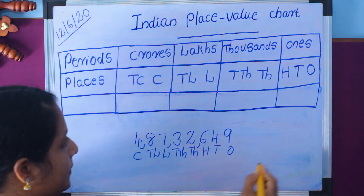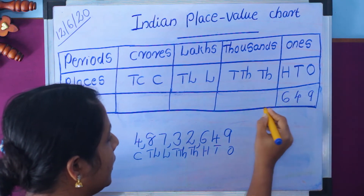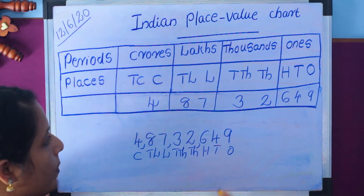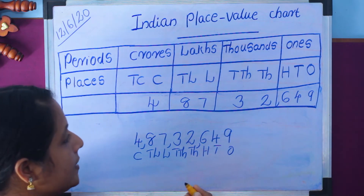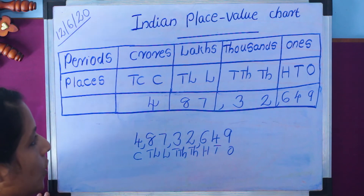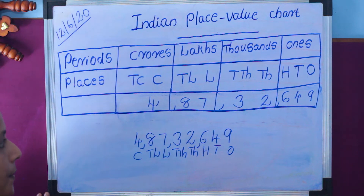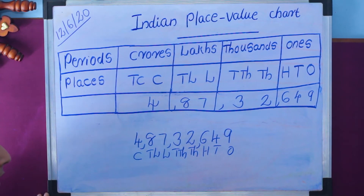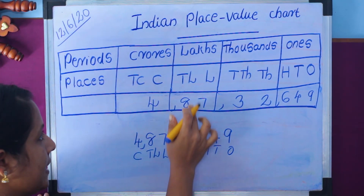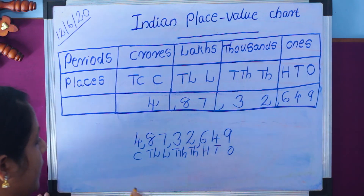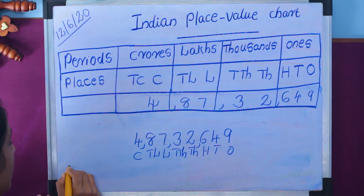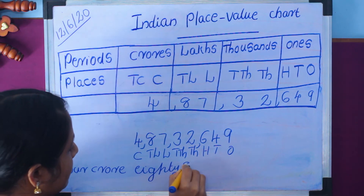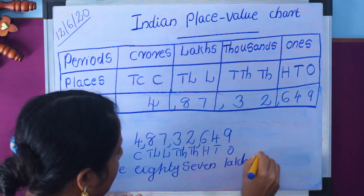We write this number inside our table: 9, 4, 6, 2, 3, 7, 8, 4. We insert commas: first after the hundreds place, second after the ten thousands place, third after the ten lakhs place. So we read this number as 4 crore, 87 lakh, 32,649. The number name is: four crore, eighty-seven lakh, thirty-two thousand, six hundred and forty-nine.